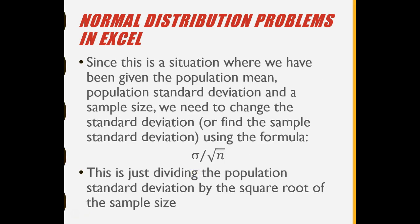Since this is a situation where we have been given the population mean, population standard deviation and a sample size, we need to change the standard deviation. What we're doing is finding the sample standard deviation using the formula: population standard deviation divided by the square root of the sample size.